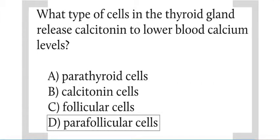The cells that release calcitonin are called parafollicular cells. It's important to keep this straight because there are structures in the thyroid gland called follicles that have follicular cells in them, which make the other types of thyroid hormones. Parafollicular cells are the cells outside of or around the follicles, and they make calcitonin. It's important not to confuse parafollicular cells of the thyroid gland with cells of the parathyroid gland — they both use 'para,' but they're referring to two different populations of cells in two different glands.